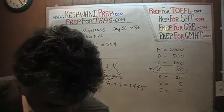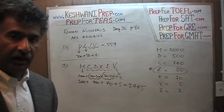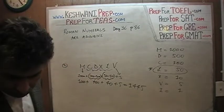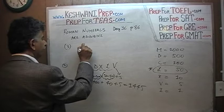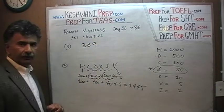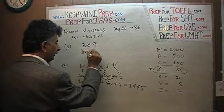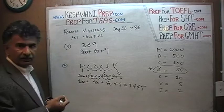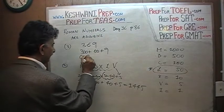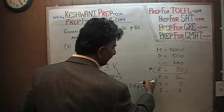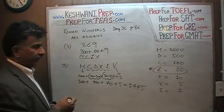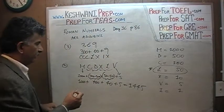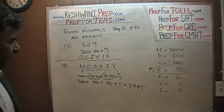The next problem: convert 639 from Arabic numerals to Roman numerals. 639 is written as 300 plus 60 plus 9. Roman numerals are additive. 300 is simply C, C, C. 60 is 50 plus 10 — so L and X. And 9 is 1 before 10, meaning I before X. There you go — that's it, we are done.